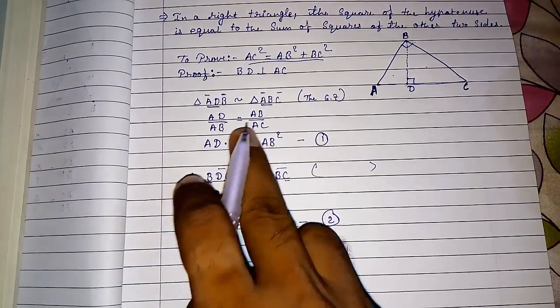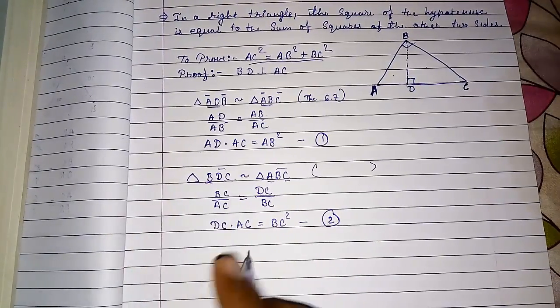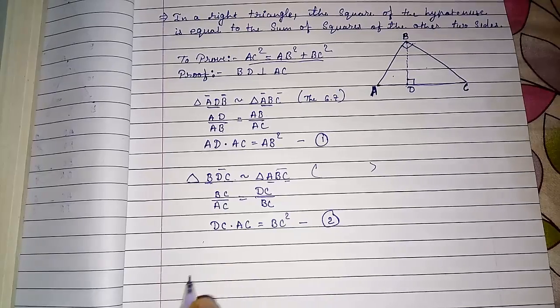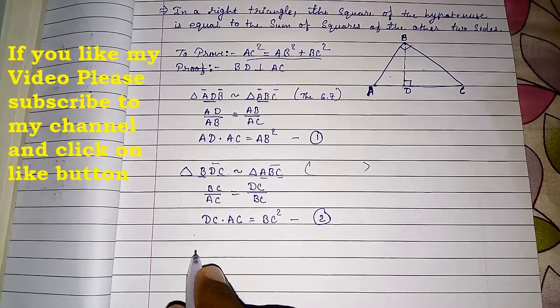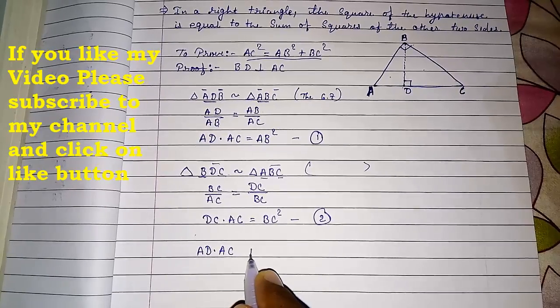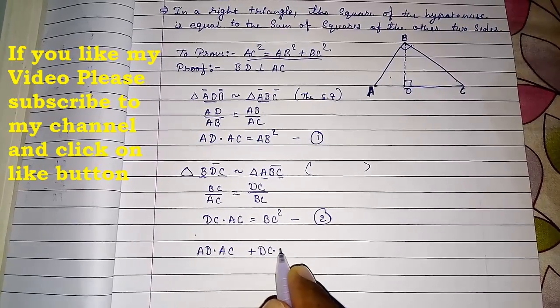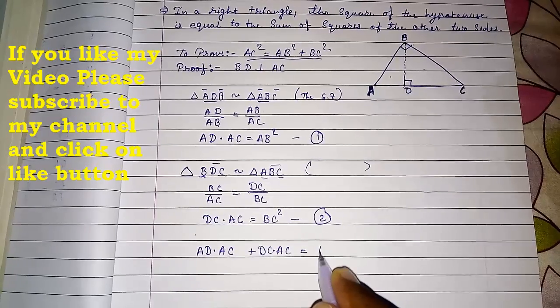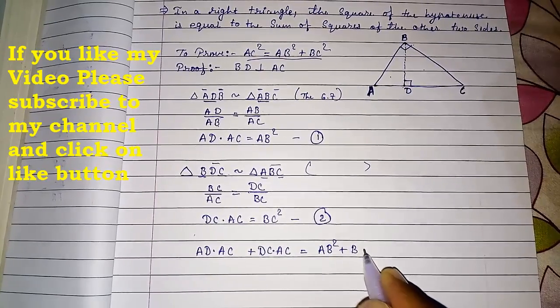Now we got these two. Now can we add these two? Adding result one and two, I will get AD into AC plus DC into AC equals AB square plus BC square.